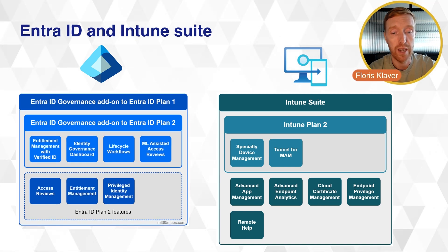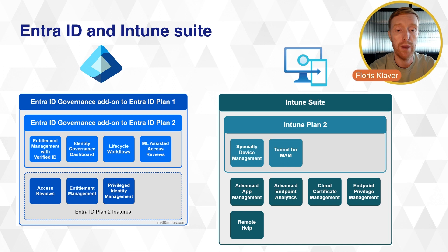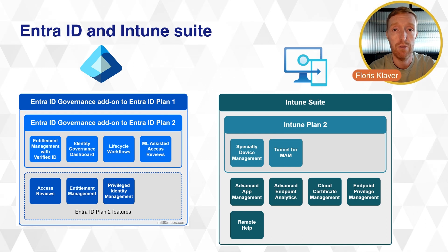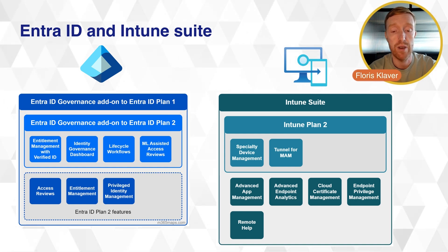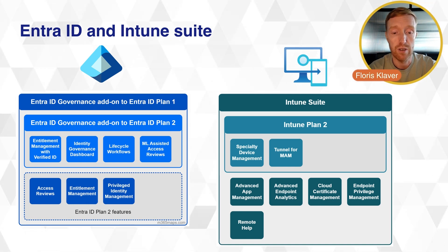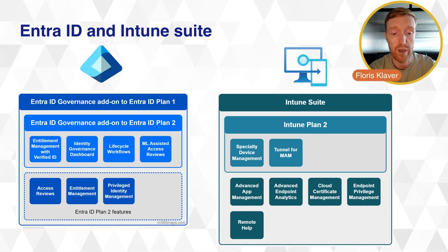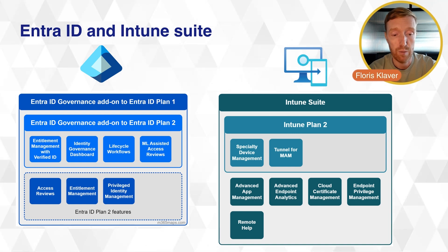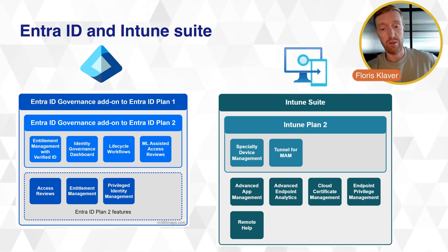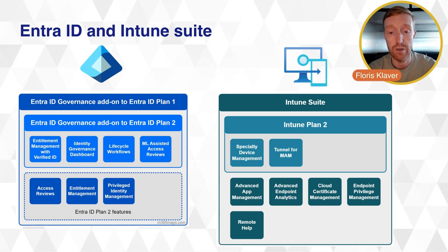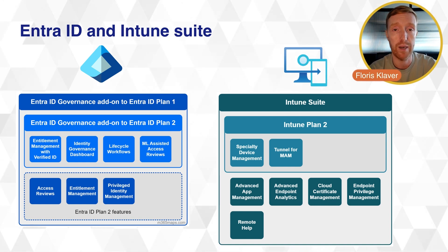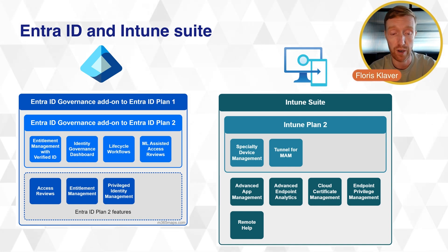Then we have the Entra ID governance add-on to Entra ID Plan 1. This adds another layer on top of the Entra ID you're used to from Microsoft 365 E3, E5, F3, and F1, giving you even more governance functionality — things like entitlement management with verified identity lifecycle workflows. Now, things that have already been out there for a long time are Project and Visio. Microsoft has obviously already versified these licenses as well, but they've never made it into the Microsoft 365 suite of products. Rather, they've been standalone for a long period of time.